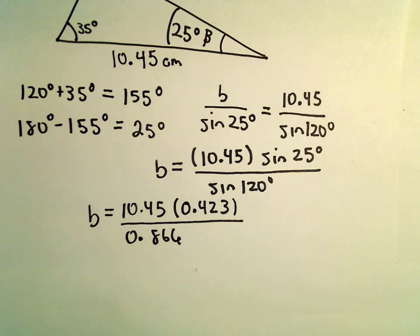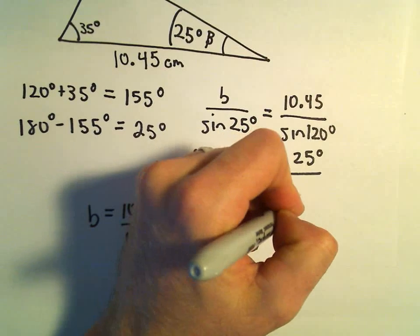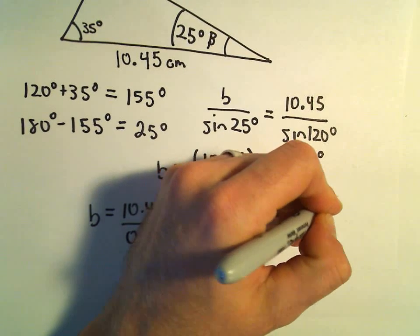Multiply that by 0.423, I'm getting that to be 4.42035.